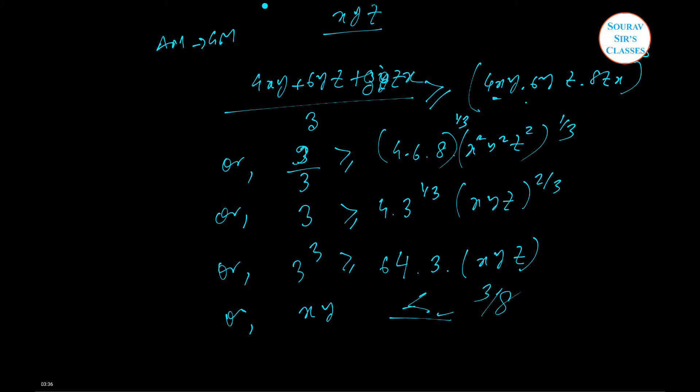Next question is being asked by Sanjana, question number 577. This is a straight line based question actually. A straight line segment AB of length A moves when its ends are on the axis. The locus of the point P is such that AP to BP is 2 to 1.